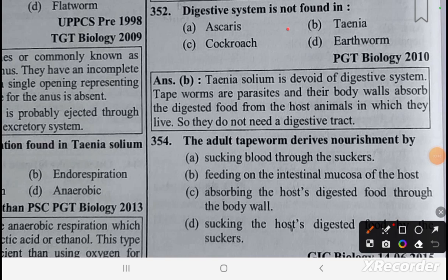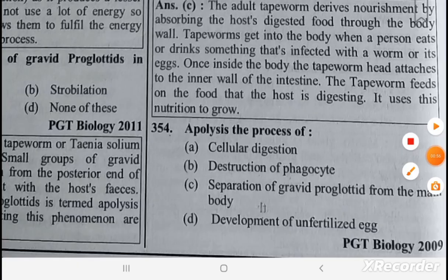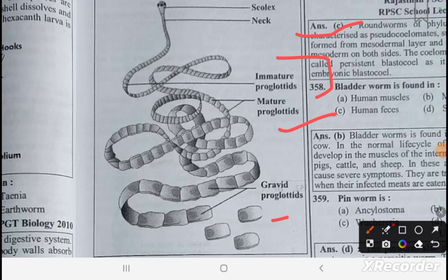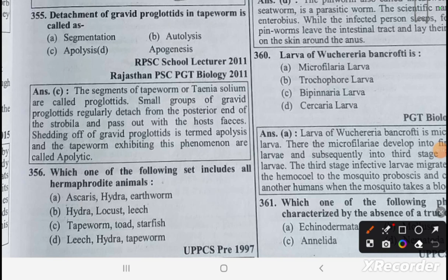The digestive system is not found in adult tapeworms. The adult tapeworm derives nourishment by absorbing the host's digested food through its body surface. Apolysis is the process of separation of the gravid proglottids from the main body. The diagram shows the scolex, neck, immature proglottids, mature proglottids, and gravid proglottids.